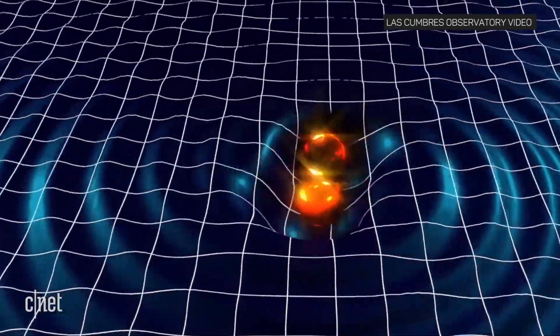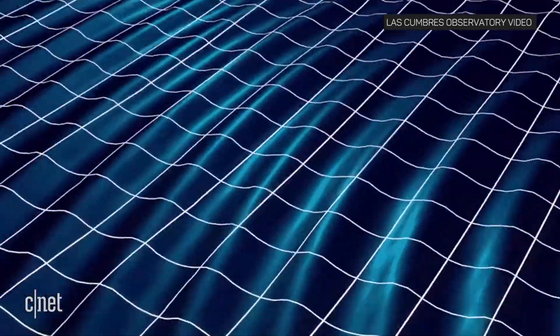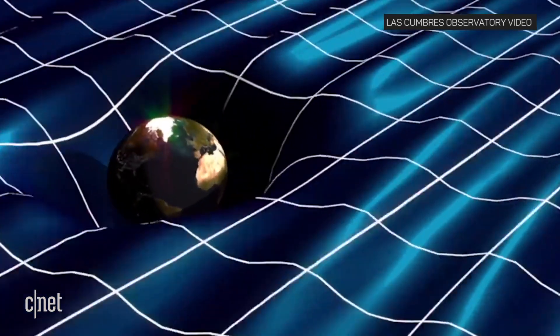Gravitational waves are distortions in spacetime, as illustrated here in this video, which makes them look like waves in the ocean.